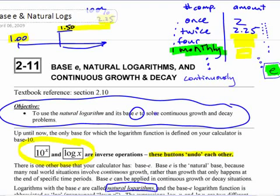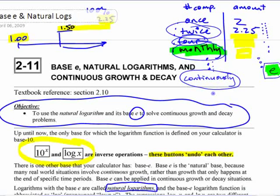Continuously would be the instant you have some interest, you put it back in the account. Here you wait until halfway through the year to put it back in the account. Here you wait until a quarter of the year and then every month. If you keep going with that, compounding continuously means the instant you have some interest, you put it in the account.